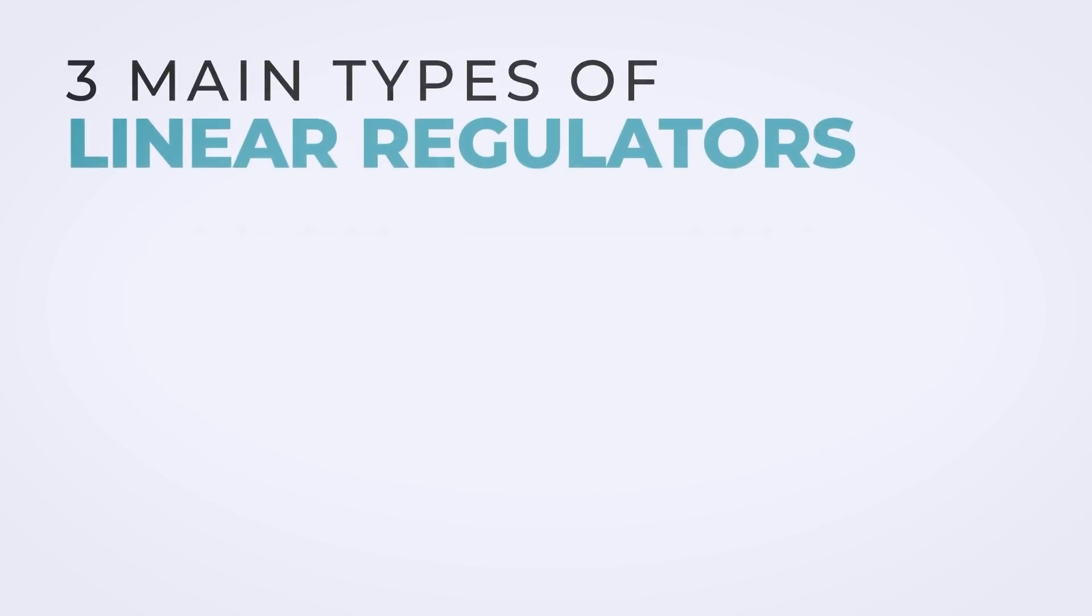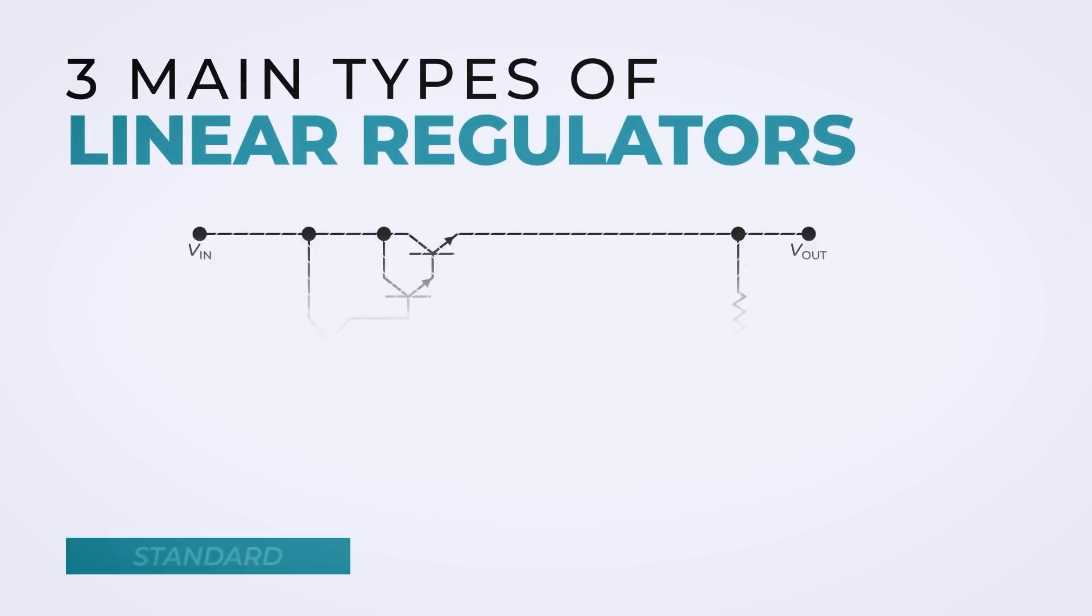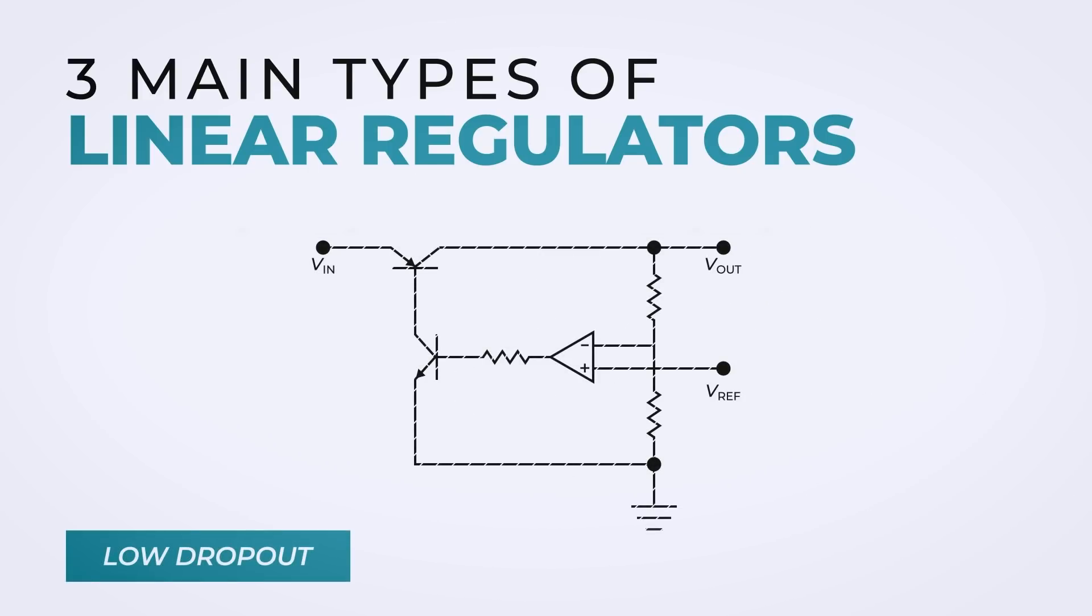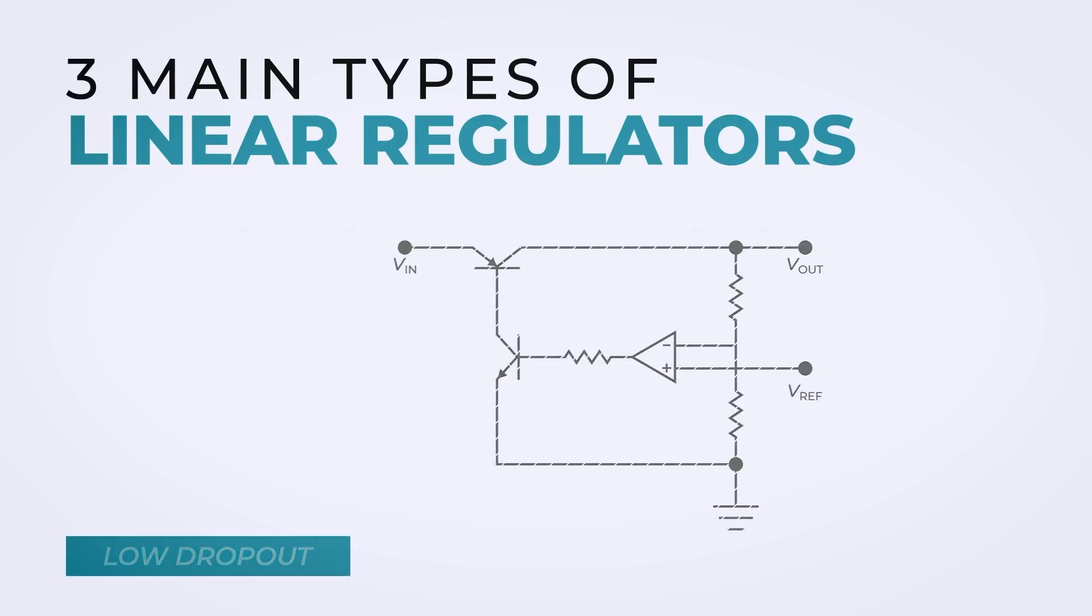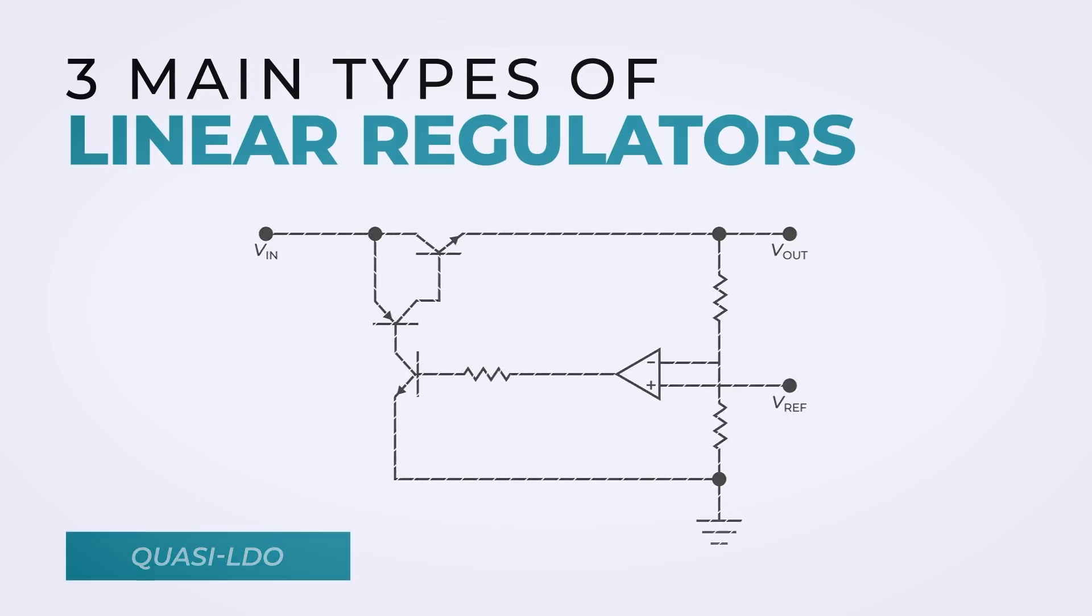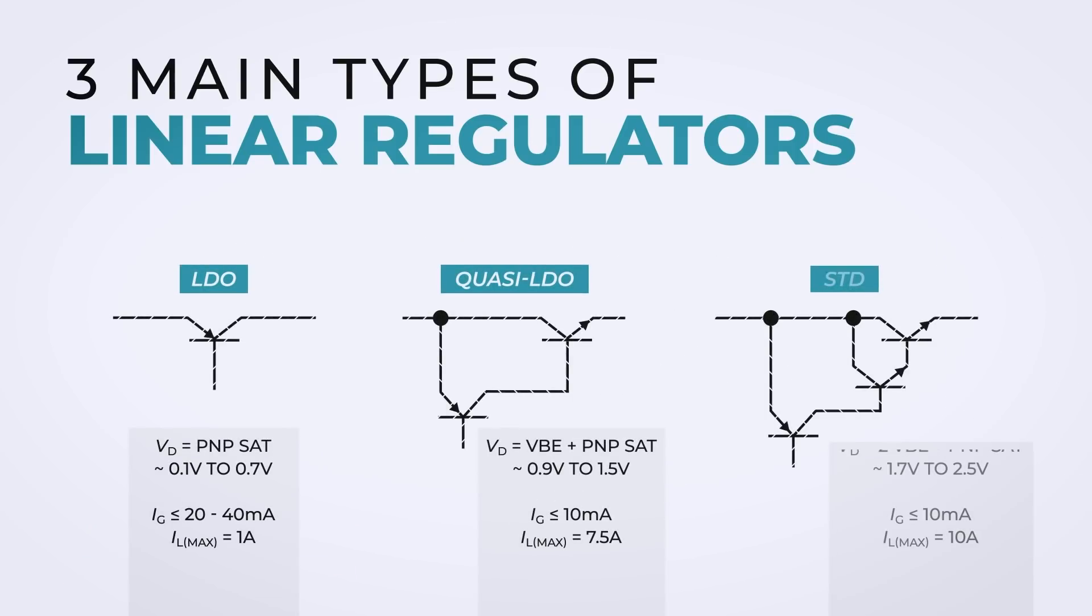Here are three main types of the linear regulators: standard, low dropout, and quasi-LDO. All of them have similar control circuitry but different voltage control current sources. This changes their dropout voltage and ground pin current.